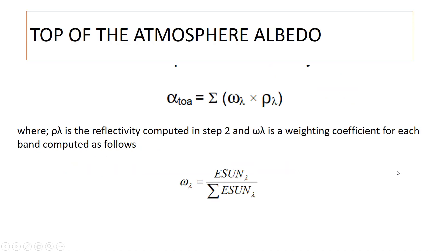Top-of-atmosphere albedo is computed by summing, for each band, the reflectivity from step 2 multiplied by a weighting coefficient. The weighting coefficient is computed by dividing the solar exo-atmospheric irradiance of each band by the sum of solar exo-atmospheric irradiance of all bands. This gives a percentage which is multiplied by the reflectivity to yield the top-of-atmosphere albedo.